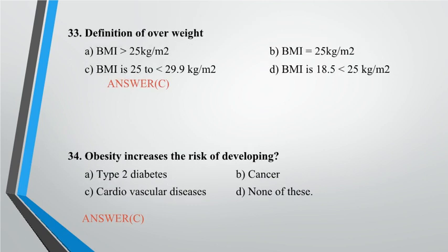Question 33: Definition of overweight — A. BMI greater than 25 kg/m², B. BMI equals 25 kg/m², C. BMI is 25 to less than 29.9 kg/m², D. BMI is 18.5 to less than 25 kg/m². Answer: C.